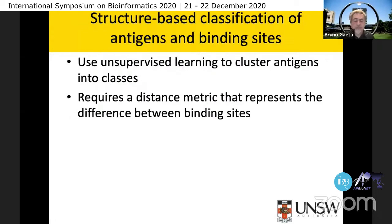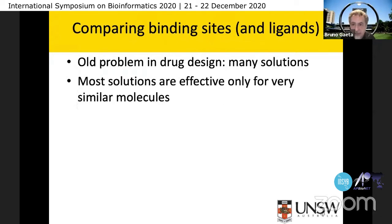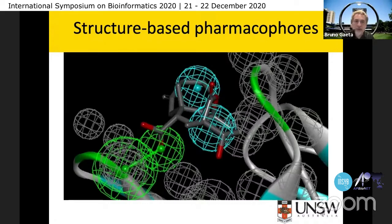One approach is to use unsupervised learning to cluster antigens into classes, because if we can predict a class, that's easier than trying to predict the individual antigen. For that, we try to build a distance metric that represents the difference between binding sites for a protein. That's been done a lot in drug design — there are many different solutions, but they work mostly for very similar molecules. We decided to branch on a method based on pharmacophores. That's something really used in drug design, and it's about representing molecules in terms of a combination of spatial and chemical properties. What we wanted was a way to compare pharmacophores and to compare molecules based on their pharmacophores.